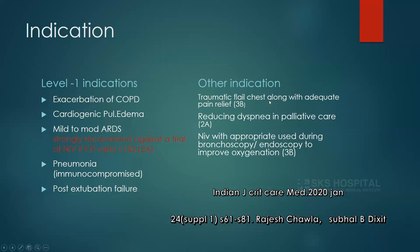Other indications include traumatic flail chest with adequate pain relief (3B evidence), reducing dyspnea in palliative care (2A), and NIV during bronchoscopy or endoscopy to improve oxygenation (3B evidence). Contraindications include inability to protect the airway — for example, RTA with GCS of 8, where direct intubation is preferred. Hemodynamic instability with triple vasopressors, inability to fix the interface due to facial trauma or surgery, severe GI symptoms such as tachypneic abdomen or severe vomiting creating high aspiration risk, massive hemoptysis or copious secretions, and post-cardiac arrest are all contraindications.